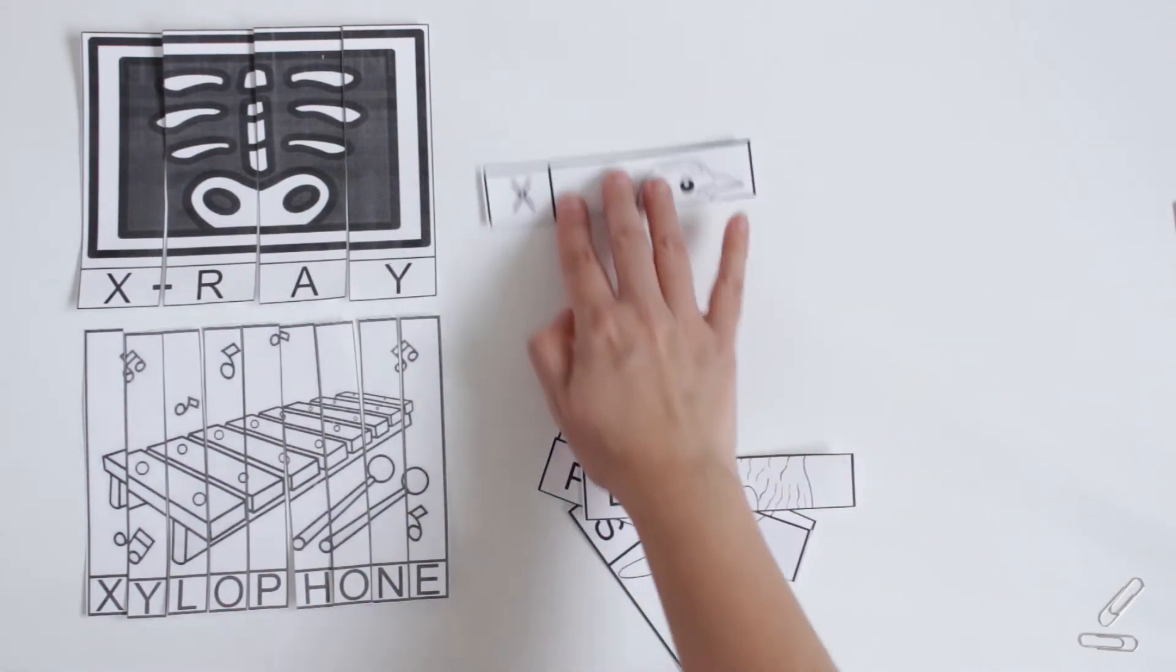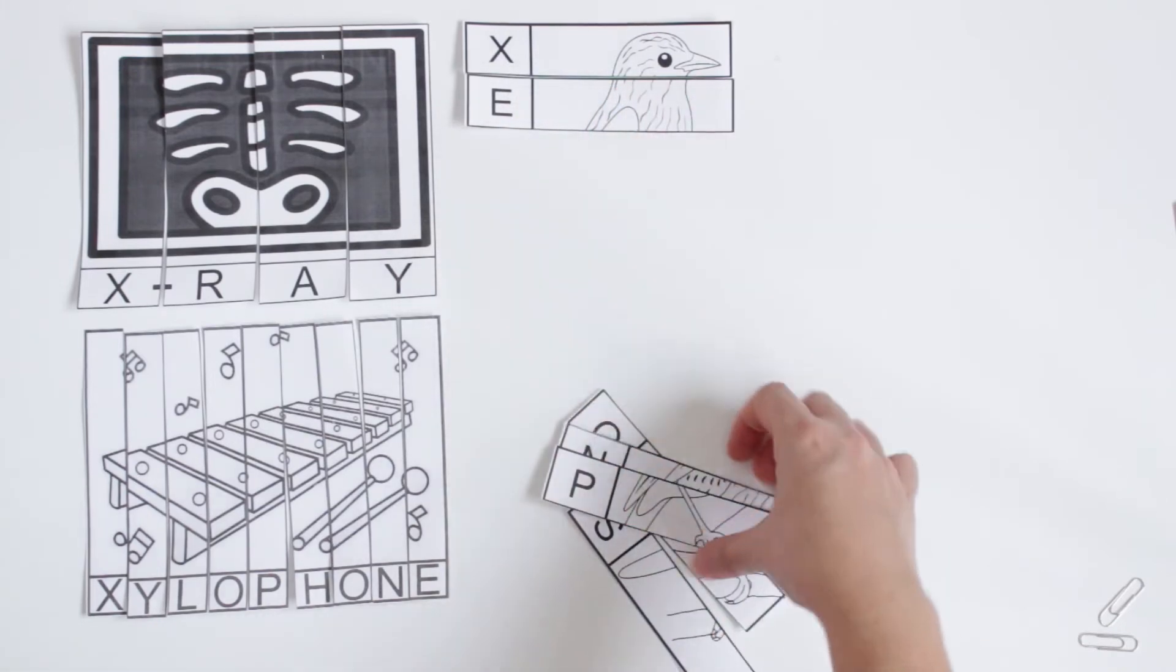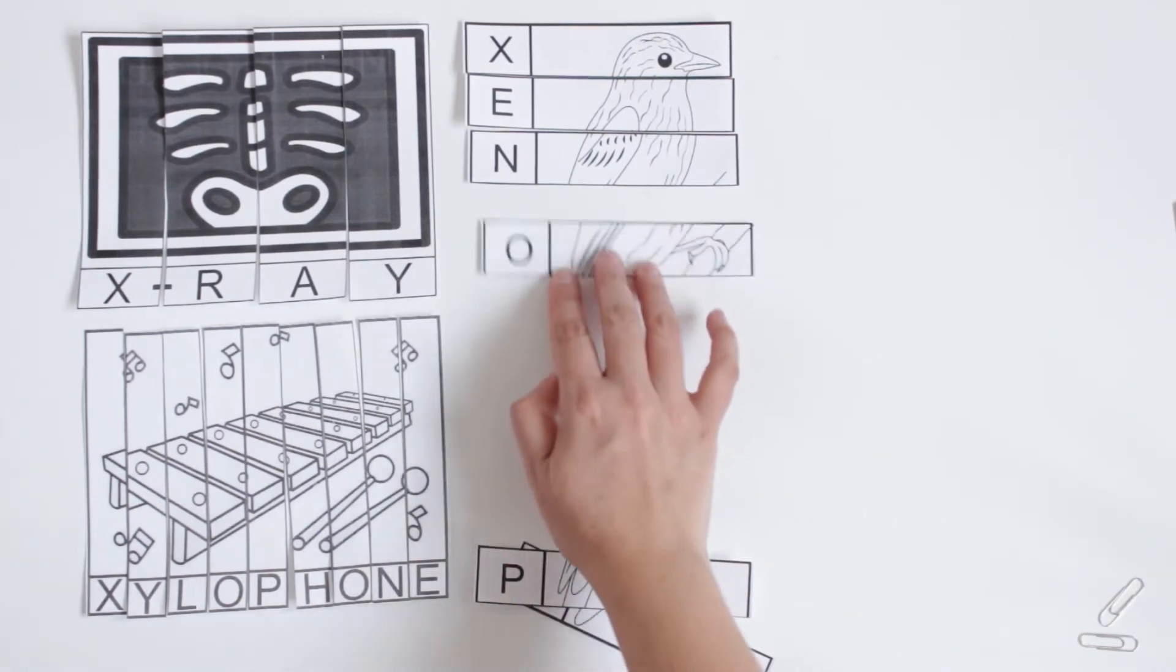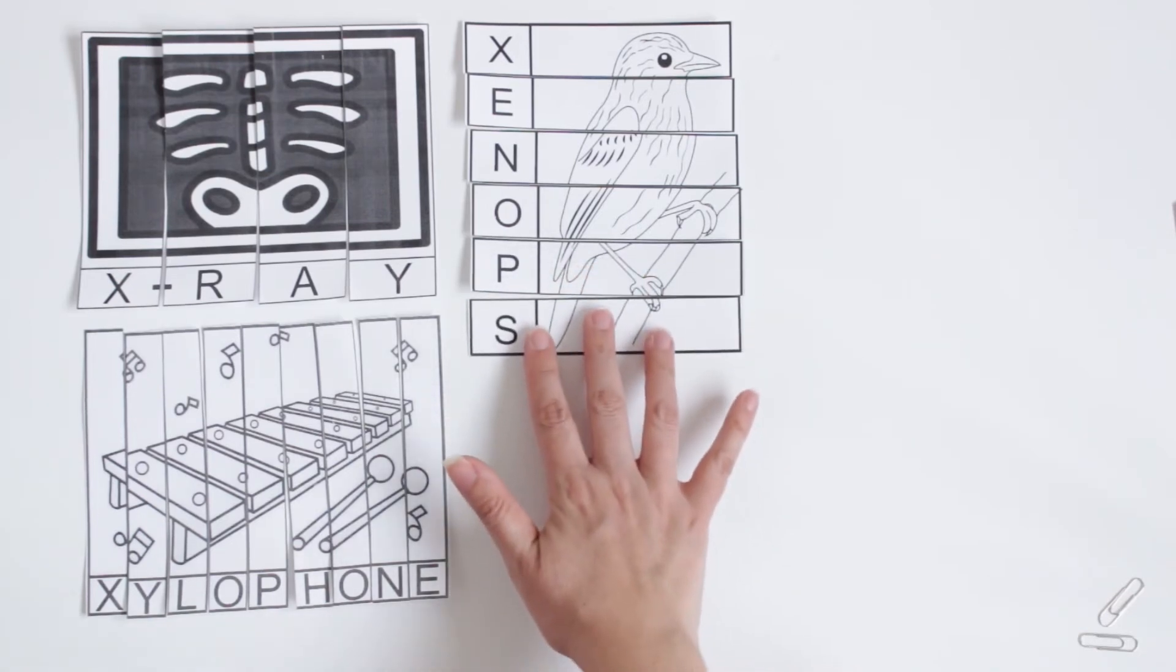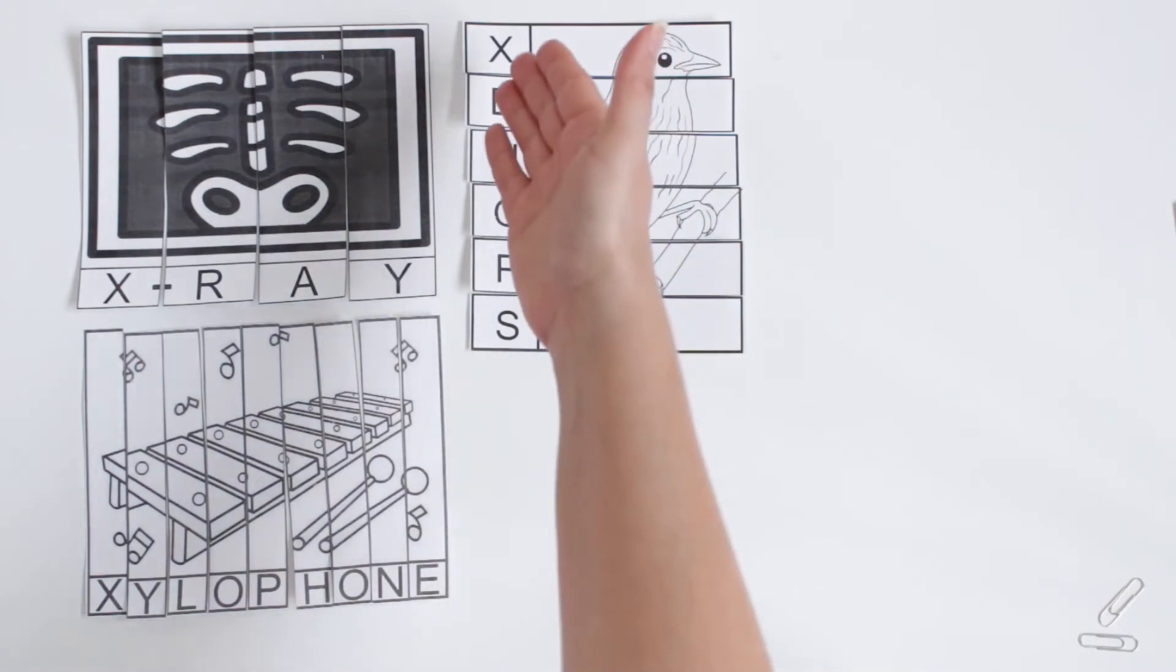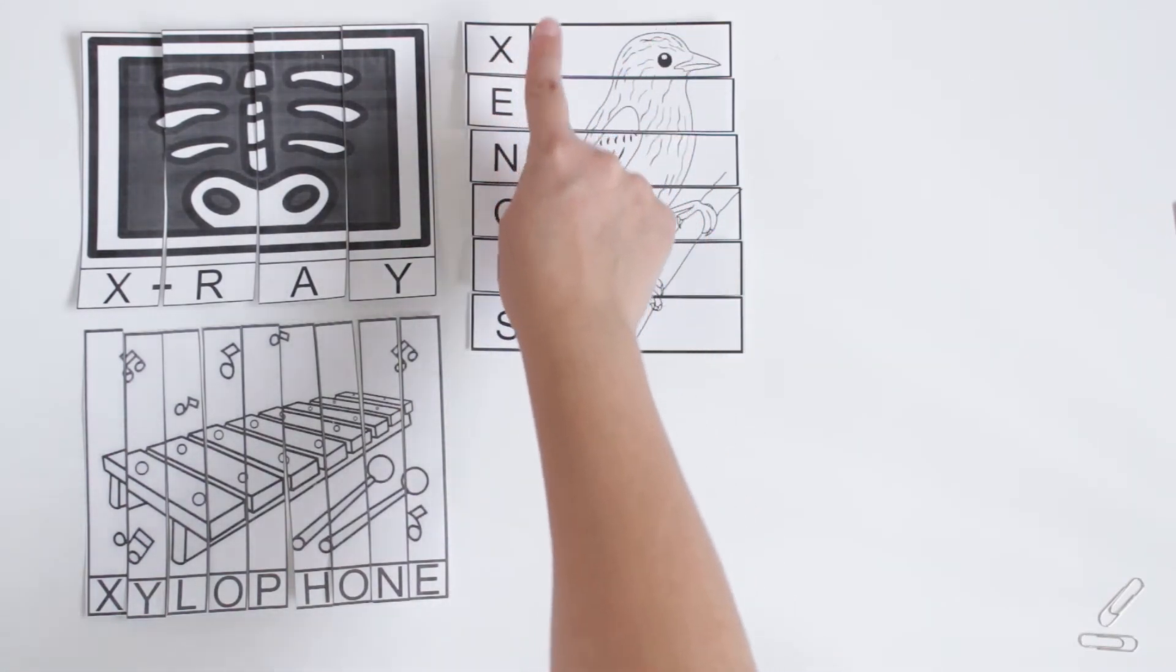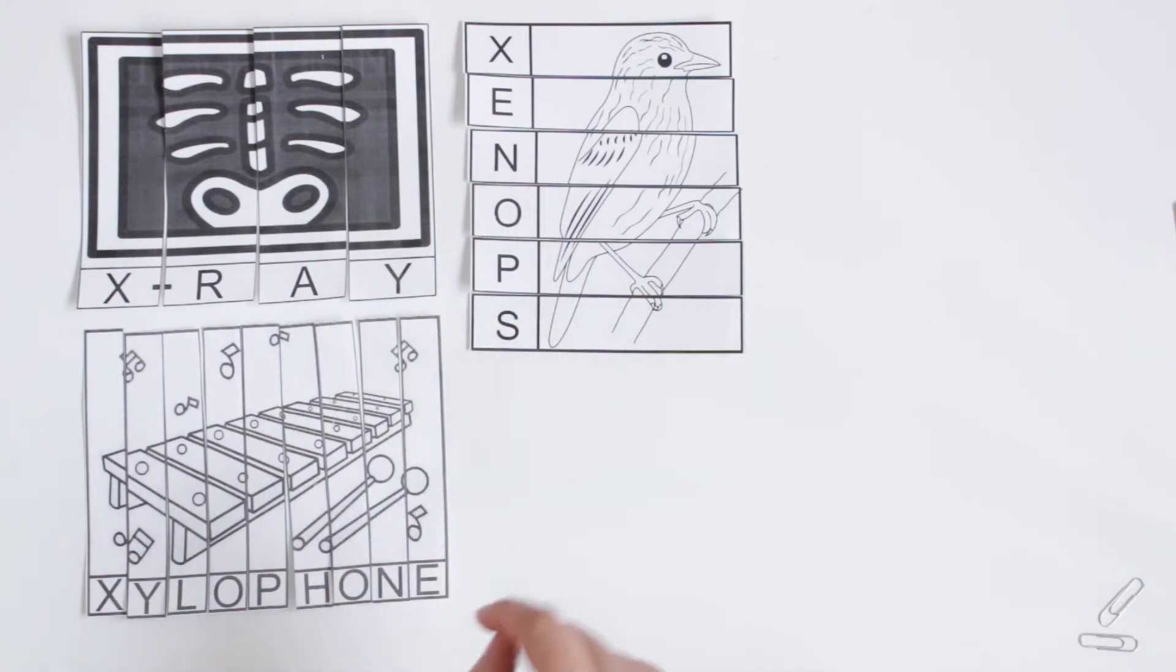Ask them to start with the letter X. This is a bird, but this bird's name is Xenops. Let's spell: X-E-N-O-P-S, Xenops.